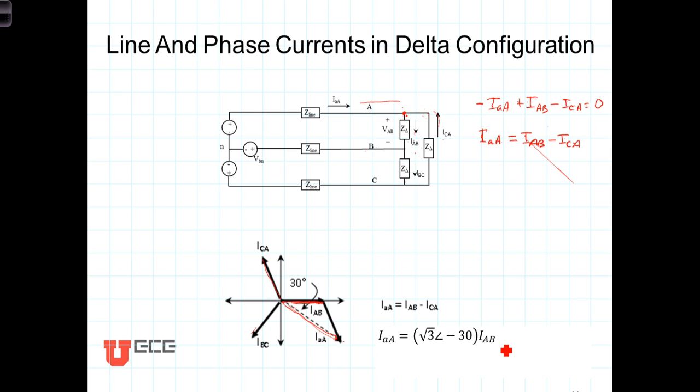Looking back up here then, it's fairly intuitive that these two currents combining are going to be greater than the line current itself, or no, the line current is going to be bigger than either of these phase currents by themselves because they're combining at this point, and the way that they combine, the trig behind it shows us that this line current here is square root of three times as big as either one of those phase currents.